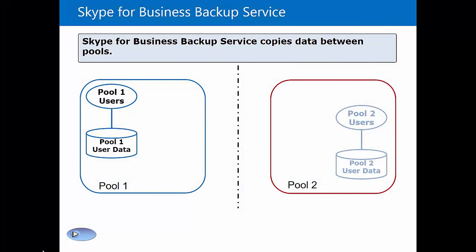Let's take a look at the Skype for Business backup service and how this operates within the pool pairing mechanism. On the left-hand side we have Pool 1, on the right-hand side we have Pool 2, and these pools are paired to each other. Pool 1 is paired to Pool 2.